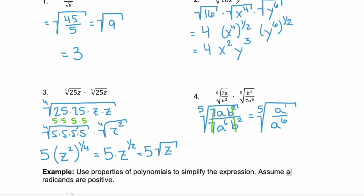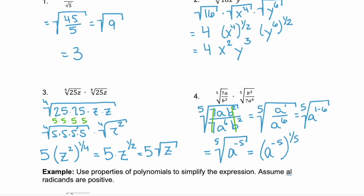That simplifies down to the fifth root of a over a to the 6th. We can use the quotient rule for our exponents — we take the exponent of the numerator, which is 1, and subtract the exponent of the denominator, 6. So that gives us the fifth root of a to the 1 minus 6, or the fifth root of a to the negative 5. Converting to a rational exponent, we have a to the negative 5 to the power of one fifth, which simplifies to a to the negative 1, and a negative exponent becomes positive if you flip — so we get 1 over a.